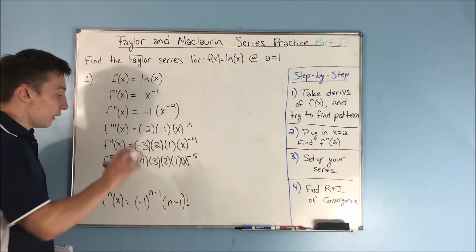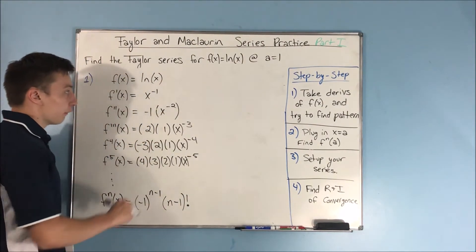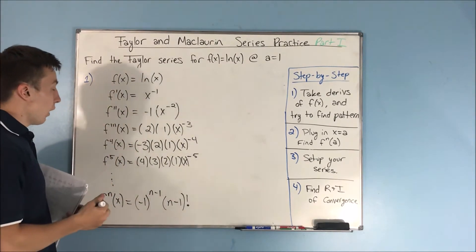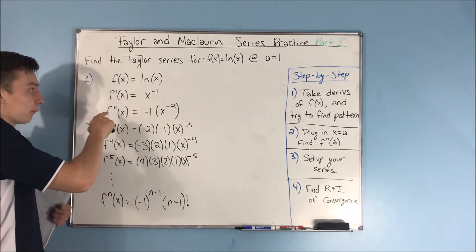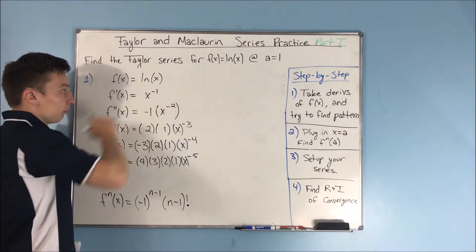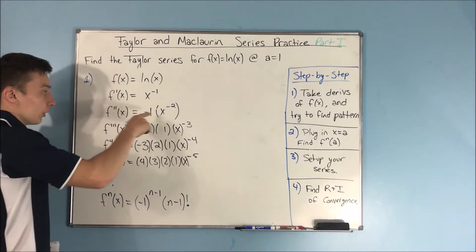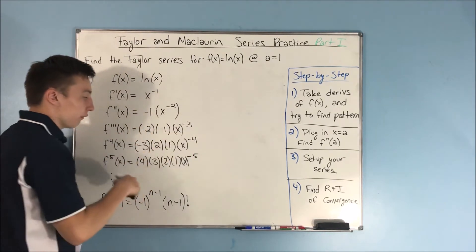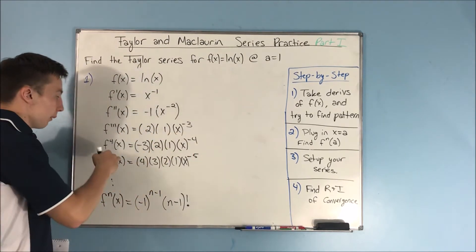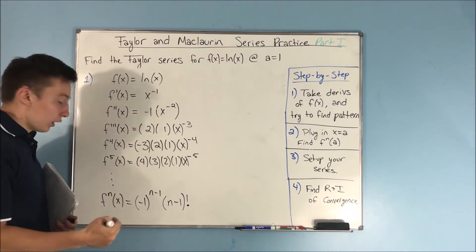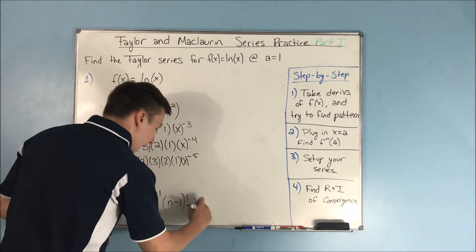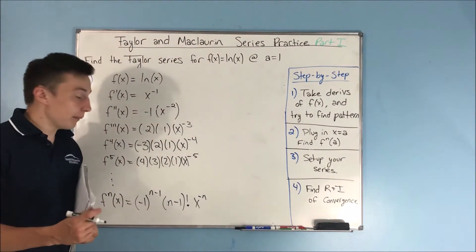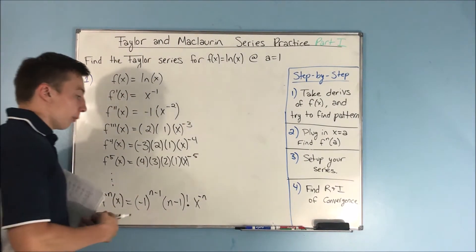For the last part of this nth derivative, we need to deal with the x to a power. When we take our first derivative, we have negative 1 in the exponent; second derivative is negative 2; third is negative 3; fourth is negative 4, and so on. So our nth derivative will give us x to the negative n. That's step 1.